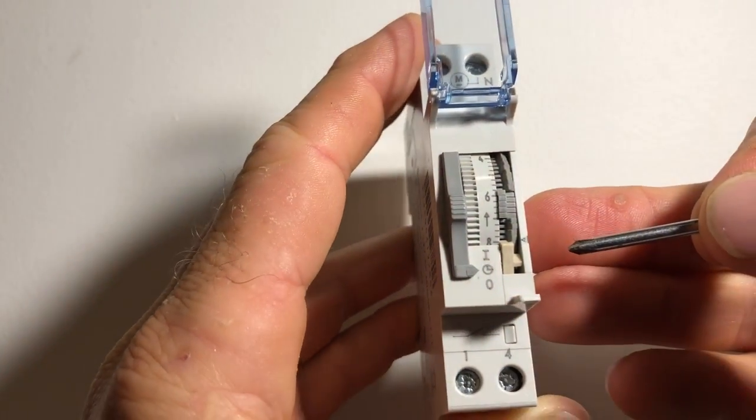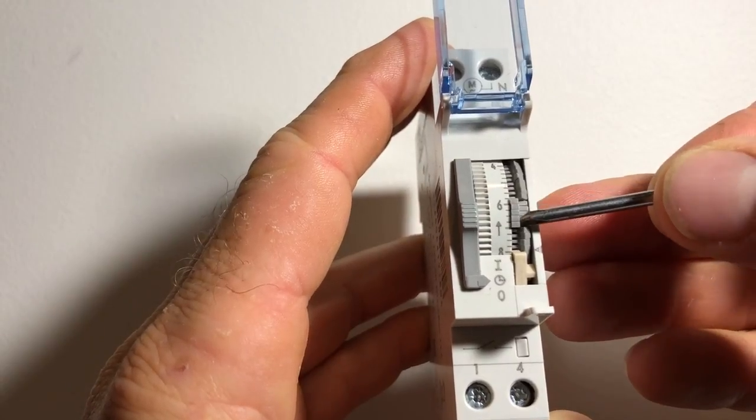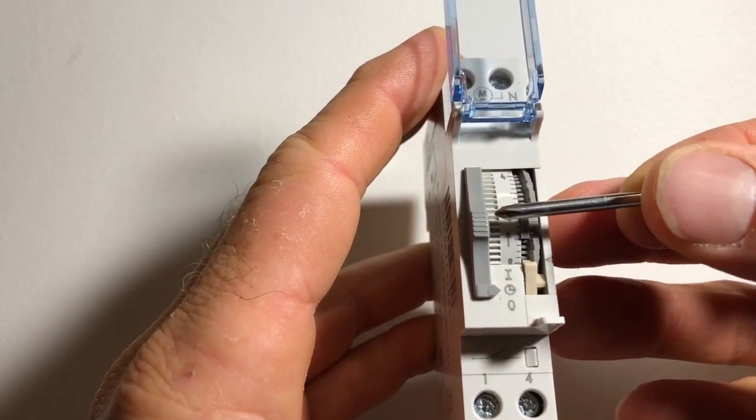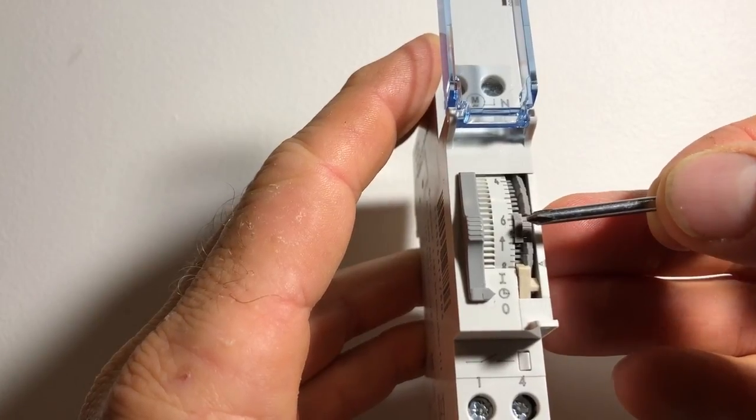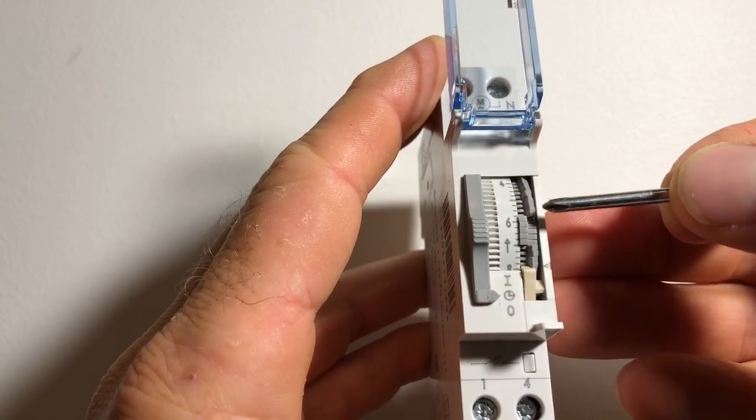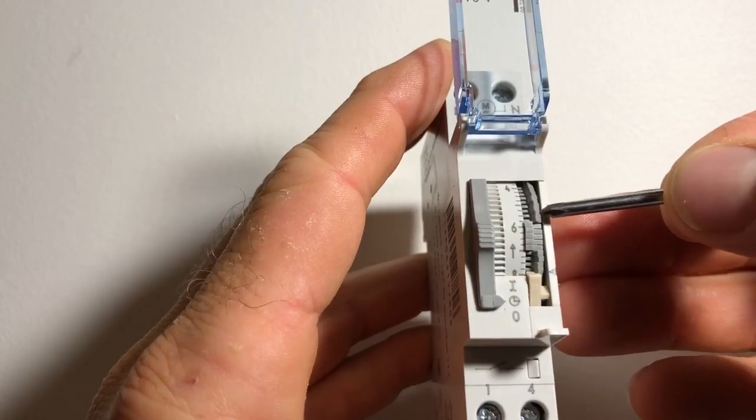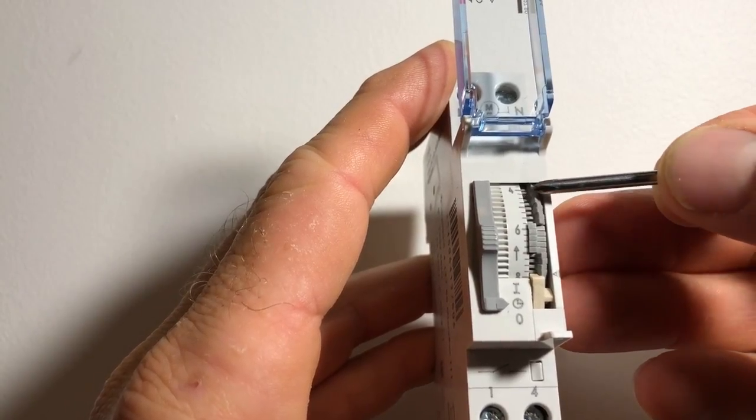Now with the Legrand timers like this one here, if these little divots are over to the left, so up against the letters, that means it's on, and if they're across this side like these ones here it means it's off.